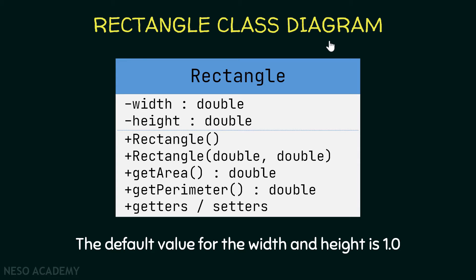Figure out the attributes and methods of the Rectangle class and implement it in Java. Note that the default value for the width and the height is 1.0. The class is called Rectangle and it has two attributes — both are private: the first is the width and the second is the height, and they are both doubles.